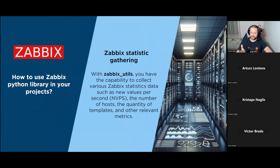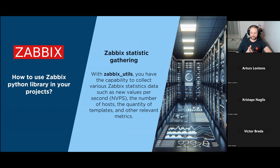Another example is monitoring solutions: if you don't have a required solution in the existing default Zabbix solutions, you can use Python and Zabbix utils to write code to gather that data, process it, and send it to Zabbix using Zabbix utils. This can also be done for gathering Zabbix statistics - you can collect NVPS, the number of hosts, quantity of templates, and other useful data. You can automate this across not just a single instance but multiple instances, perhaps for visualizing or analyzing data.